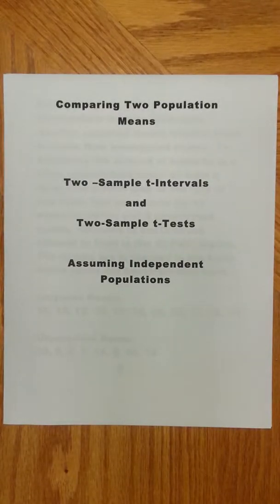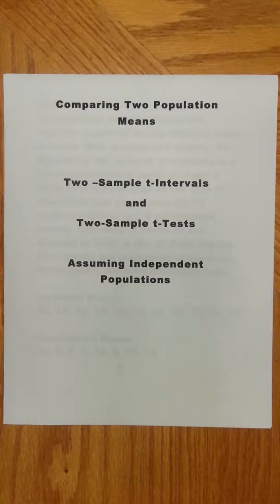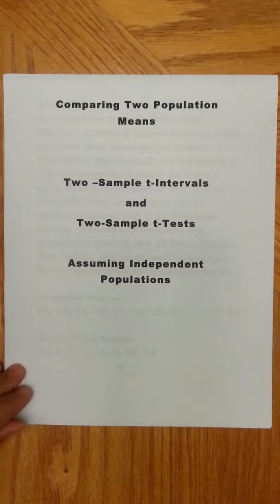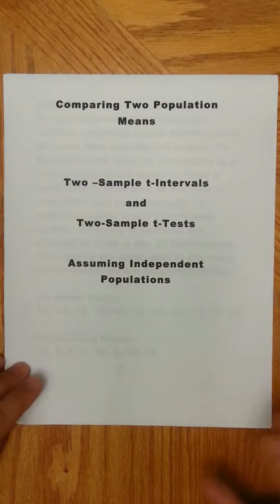In this video, we're going to look at comparing two population means — a numerical trait across two populations. Formally, that's called a two-sample t-interval if you're calculating a confidence interval, and a two-sample t-test if you're calculating a hypothesis test. We are assuming here independent populations, so there's no matched pairing like before-and-after tests.